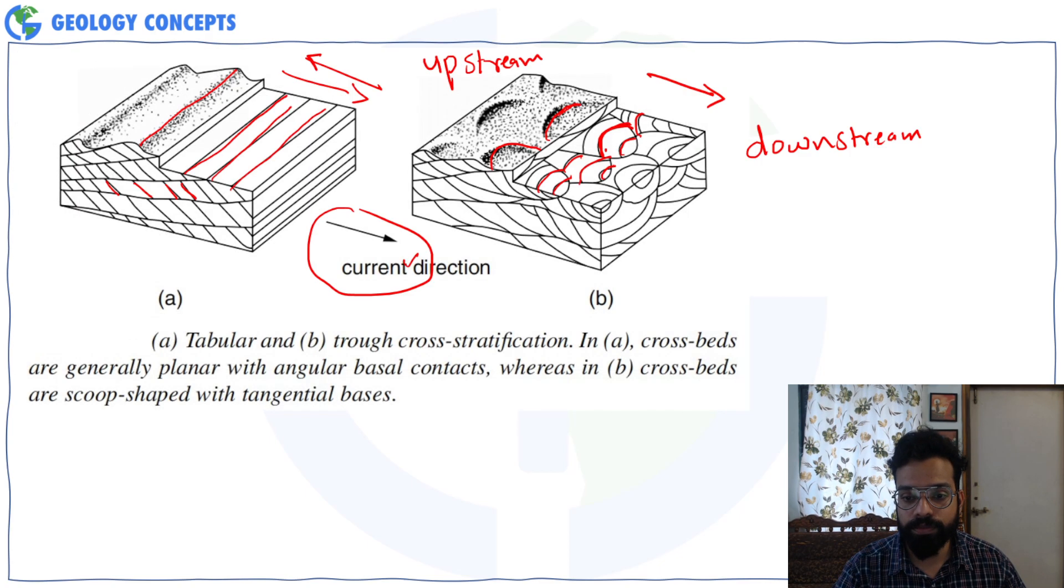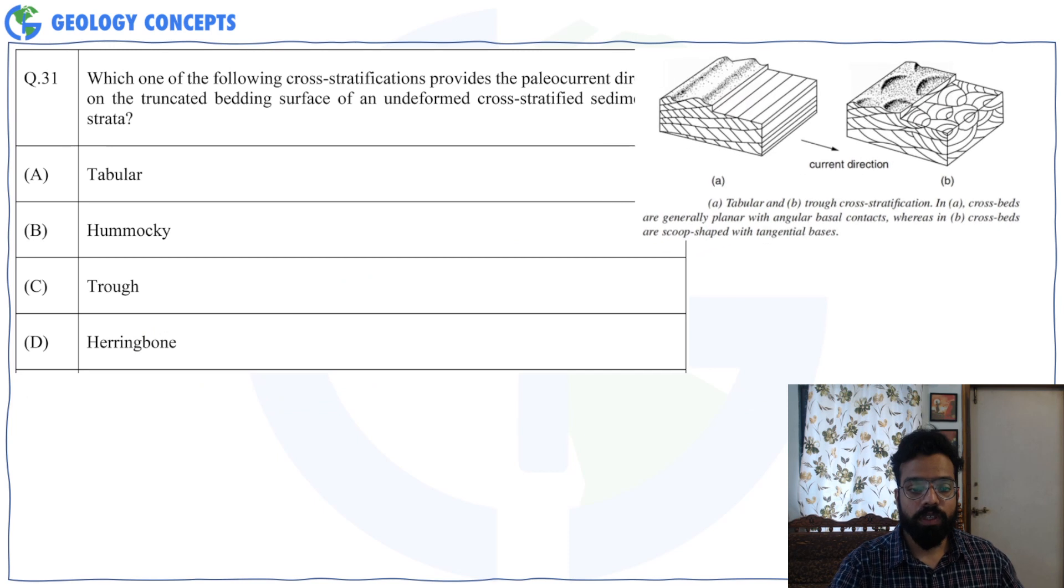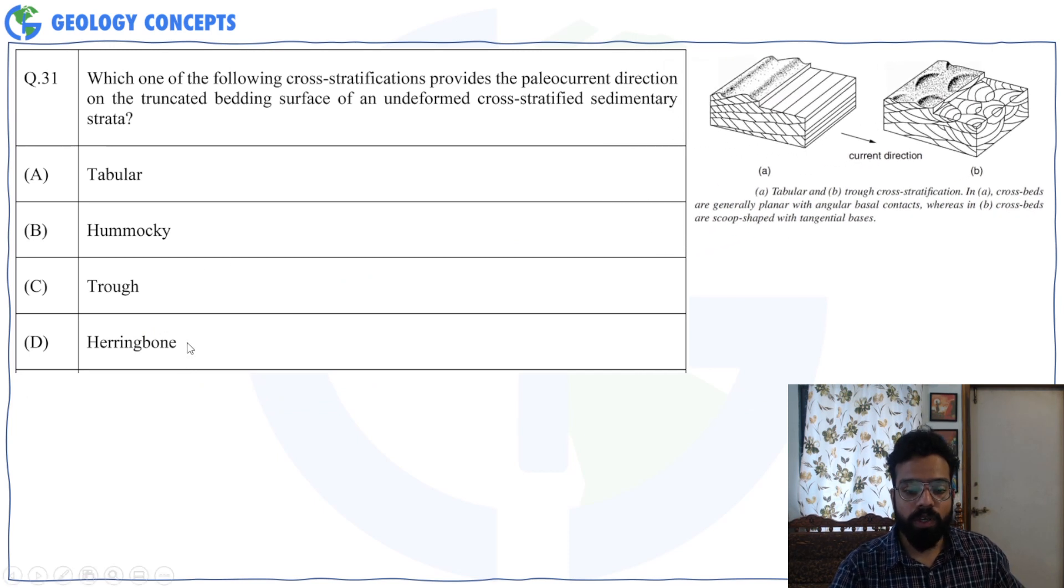So if you look at the other two options, you have hammocky and herringbone. Now herringbone cross stratification happens in tidal plains where you have equal and opposite flow of current. So over there also, you will not be able to get the current direction from looking at the bedding parallel section.